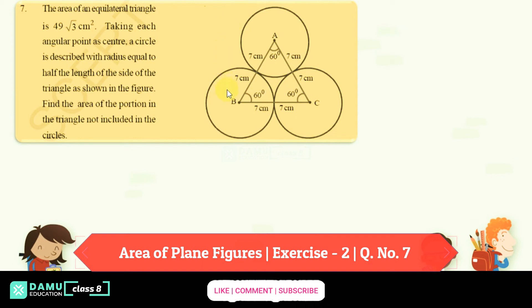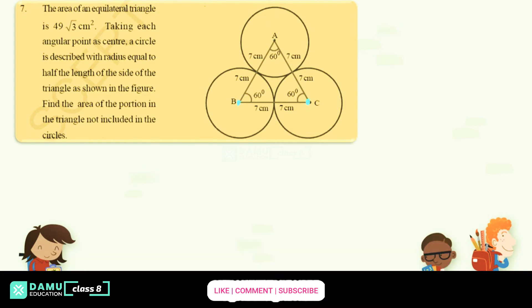In this module, we are going to discuss the following problem: the area of an equilateral triangle is 49√3 cm². Taking each angular point as a center — points A, B, and C — with radii equal to half the side of the triangle, as shown in the figure, find the area of the portion of the triangle not included in the circles.